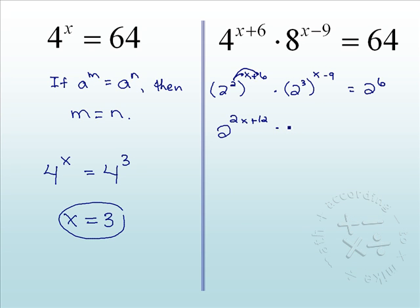Times the same thing over here, distribute that 3 through that exponent: 2 to the 3x minus 27 equals 2 to the sixth.